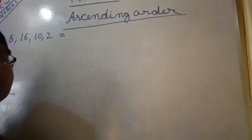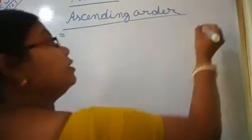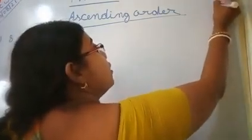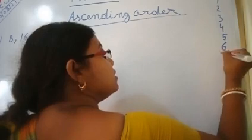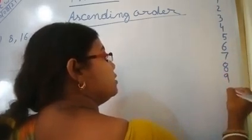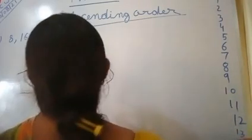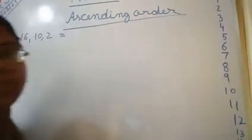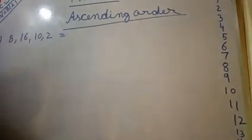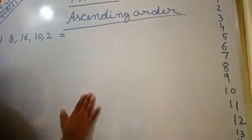In forward counting, as we go up, the number becomes bigger and bigger. I am writing: 0, 1, 2, 3, 4, 5, 6, 7, 8, 9, 10, 11, 12, 13, 14, 15, and the number is 16. So always remember, when you write forward counting it is automatically smaller number to bigger number. You just have to write in a proper way — smaller number to bigger number — because ascending order means smaller number to bigger number.